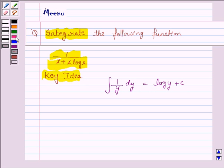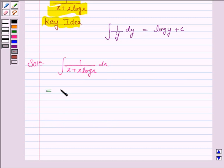Let us now move on to the solution. We have to find the integral of 1 upon x plus x log x dx, which is again equal to the integral of 1 upon, we take x common, so we have x into 1 plus log x dx.